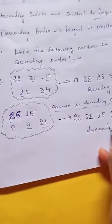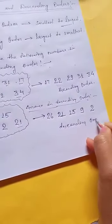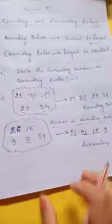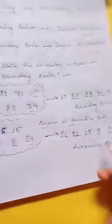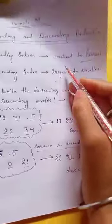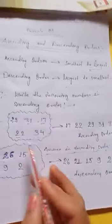Numbers are now arranged in descending order. Very simple! We can very quickly arrange numbers in ascending and descending order. Any problem? Ascending order: smallest to largest. Descending order: largest to smallest. We arrange the numbers in ascending order here and descending order here.